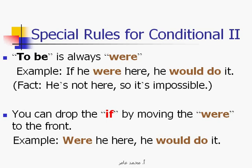Special rules for conditional 2: the verb 'to be' is always 'were'. In the second conditional, verb to be is always 'were' when it comes after 'if' in the if clause — 'if he were.' Notice we don't say 'if he was' — we say 'if he were.'